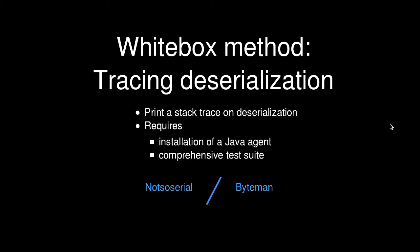The white box method of finding this is if you have the code itself, grep the code looking for the particular Java call ObjectInputStream readObject. The other thing you can do if you're able to run the code in a controlled environment is to install the Java agent, run your performance test or other test harnesses, and it will print stack traces when deserialization occurs so you can narrow down where it's happening. You can use not-so-serial to do that — it's pre-canned and ready to go — or you can use ByteMan, a Java agent tool used at Red Hat.